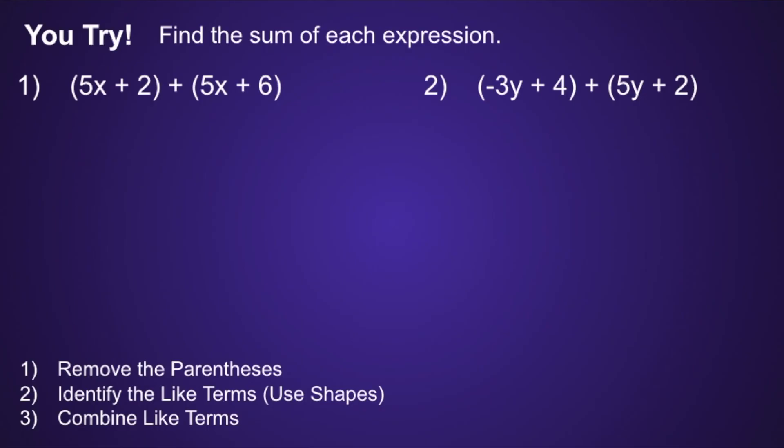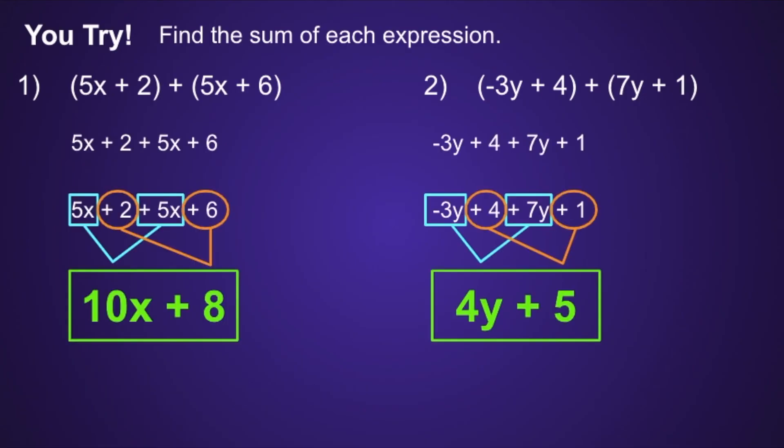Let's take a look. The final expression for number 1 is 10x plus 8, and the final expression for number 2 is 4y plus 5. If you had either of these incorrect, I would recommend you pause the video now, review your work, and see if you can find your mistake.